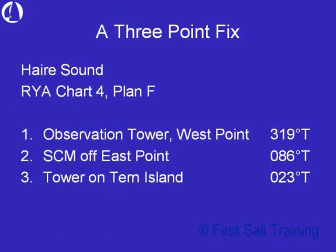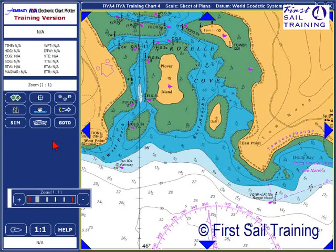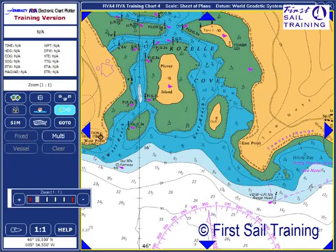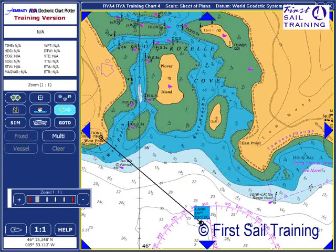Using the measuring tool to put in a three-point fix is fairly straightforward. Here we have our three observations. Going to the chart, we need to select the measuring tool — it's a fixed bearing line that we want. Our first bearing was from the observation tower on West Point, so we move our mouse on top of that and click. The bearing we're looking for is 319 degrees true from our position to the observation tower, so it's important to remember that bearing is shown in the information box as the reciprocal bearing. We line it up at 319 degrees true and click.